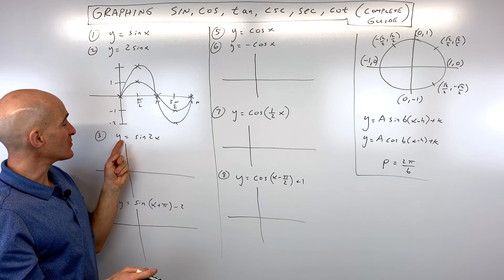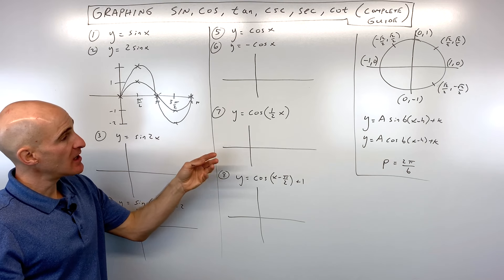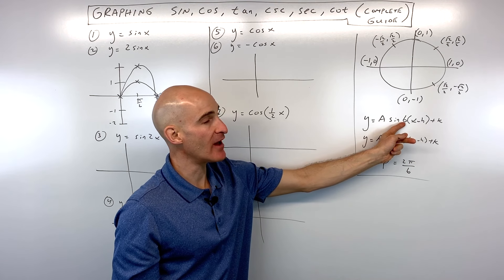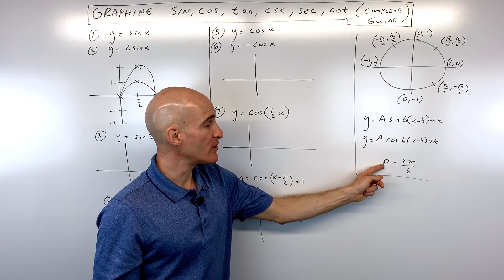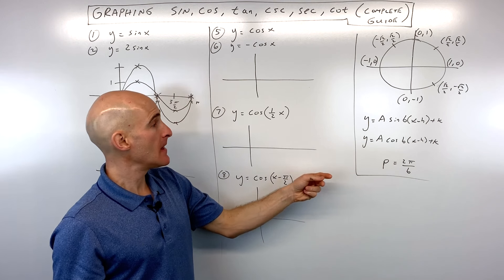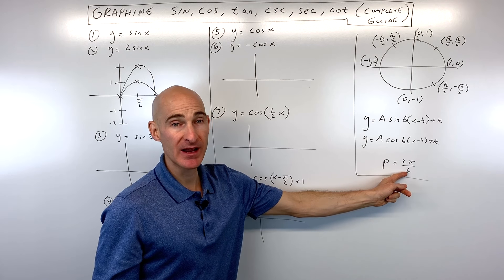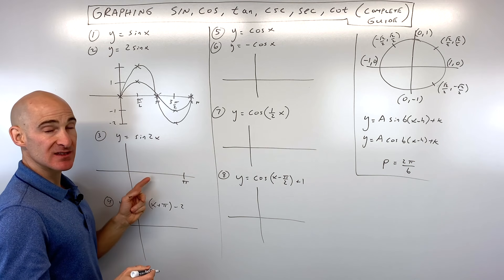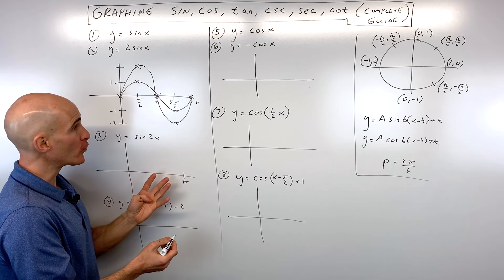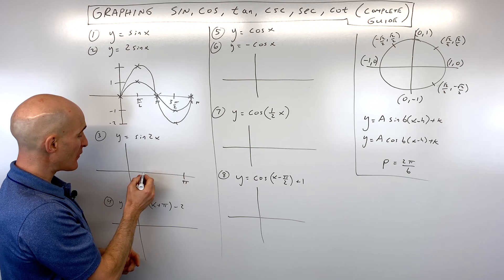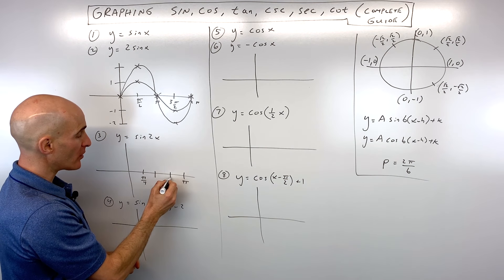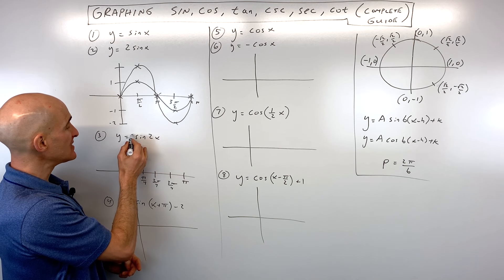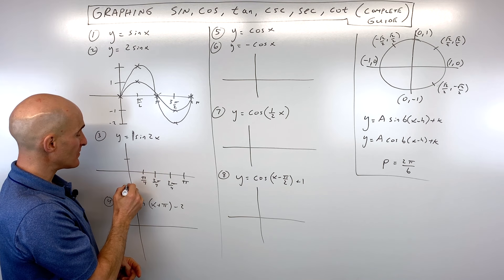Now let's say we want a slightly more challenging problem, like y equals sine of two x. This b value — the constant that comes before the variable x — affects the period. We can use the formula period equals two pi over b to find the new period. In this case the b value is two, so two pi divided by two is just pi. Our period is going to be pi. I like to mark the x-axis scale first — divide pi into four pieces, so pi over four, two pi over four, three pi over four, four pi over four.